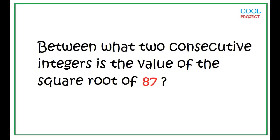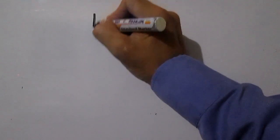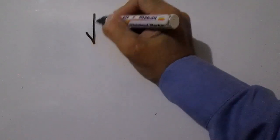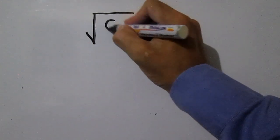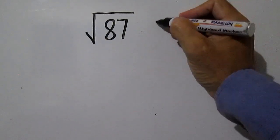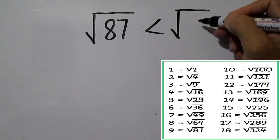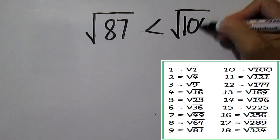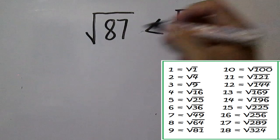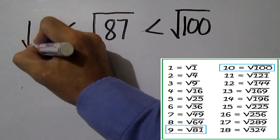Between what two consecutive integers is the value of the square root of 8? Square root of 8 is between square root of 9 and square root of 4, so it is between integers 2 and 3.